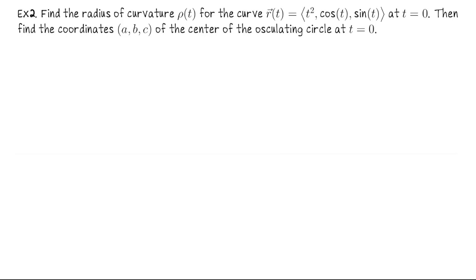Let's do another example. We are asked to find the radius of curvature for the curve r(t) = (t², cosine t, sine t) at t equals 0, and then find the coordinates of the center of the osculating circle at t equals 0. The radius of curvature is a new phrase — it refers to the radius of the osculating circle, which equals 1 over the curvature.